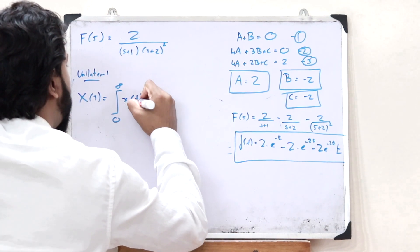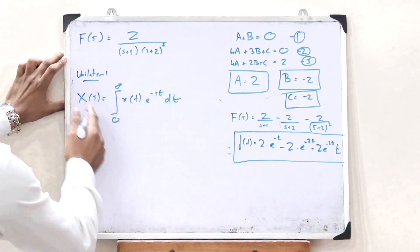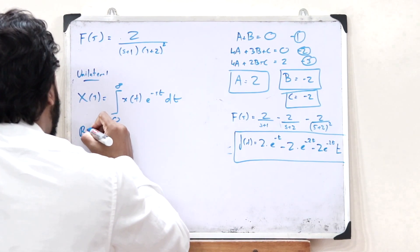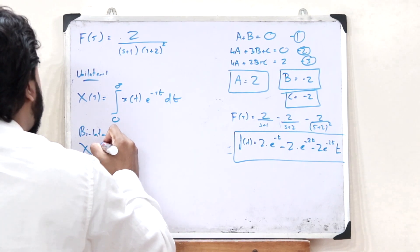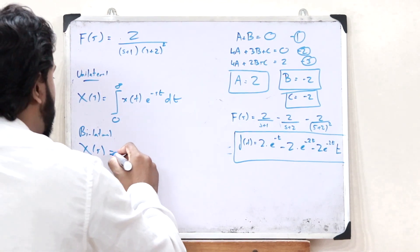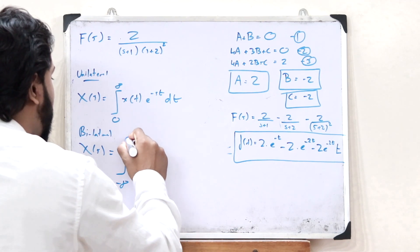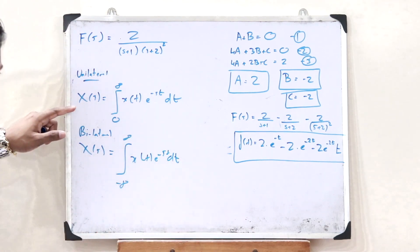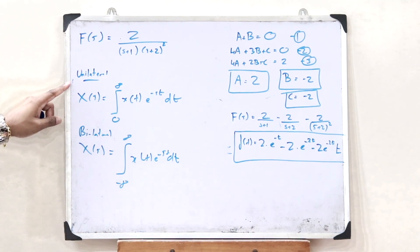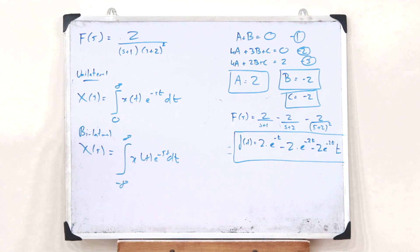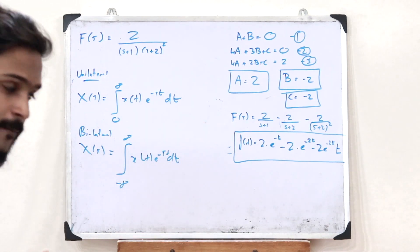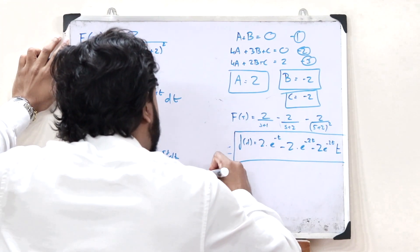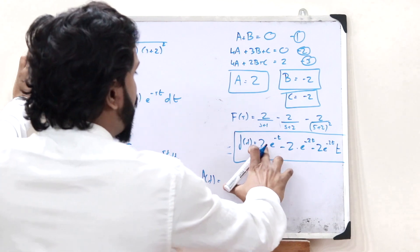A bilateral Laplace transform is defined as the integral from minus infinity to infinity of x(t)·e^(−st) dt. This is the key difference between the two. If this was a unilateral Laplace transform, we write f(t) equal to the result multiplied by u(t).